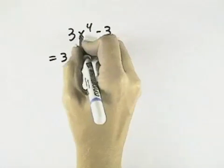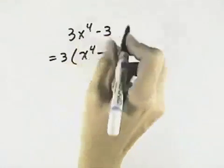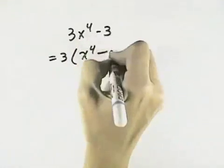When we do that, when we divide the first term by 3, we're left with x to the fourth. When we divide the second term by 3, 3 divided by 3 is 1.